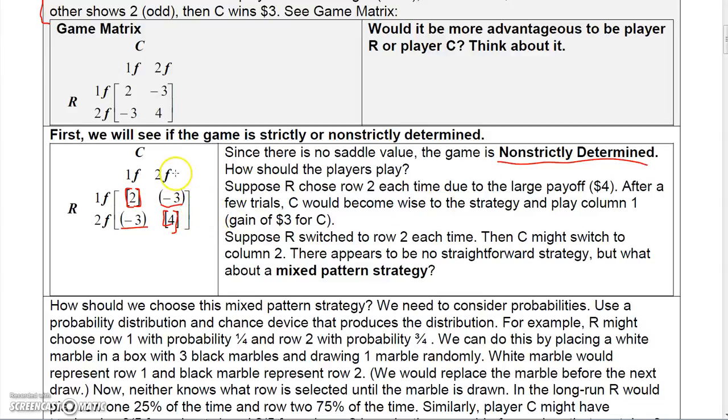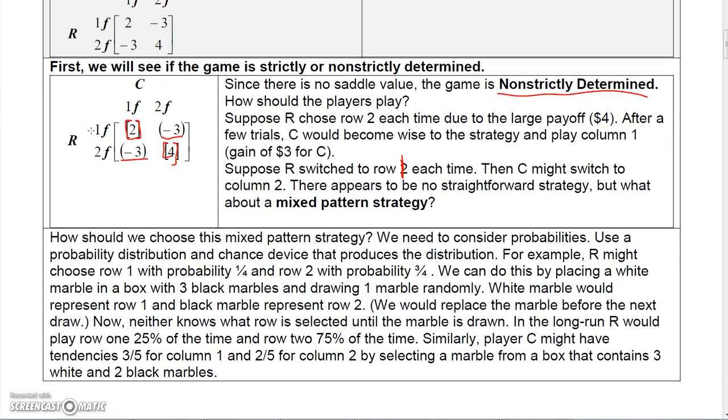So how should the players play since there's no saddle point? Well, suppose R chose row two each time due to the large payoff. If R played two fingers each time, then after a while, C would become wise to the strategy and only play one finger so that C could gain three dollars. But if R switched to row one each time, then C might switch to column two. So there appears to be no straightforward strategy. But what about a mixed pattern strategy?